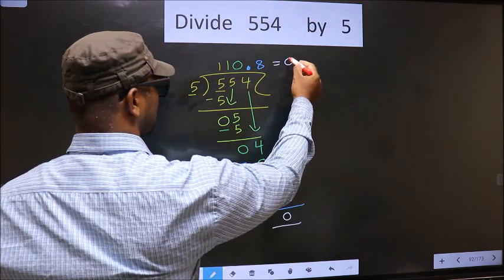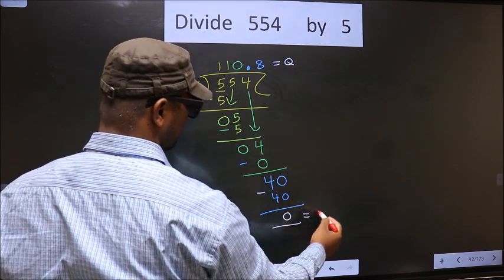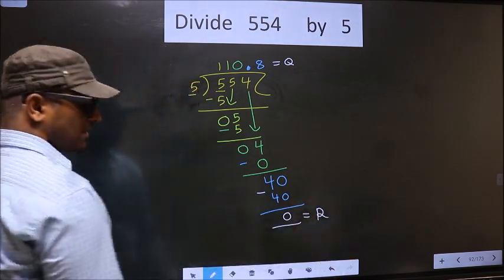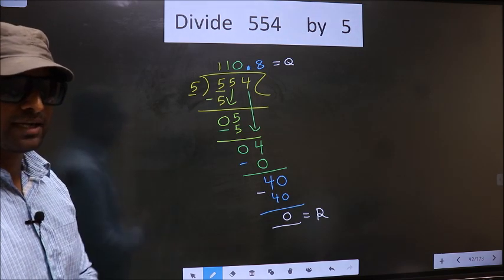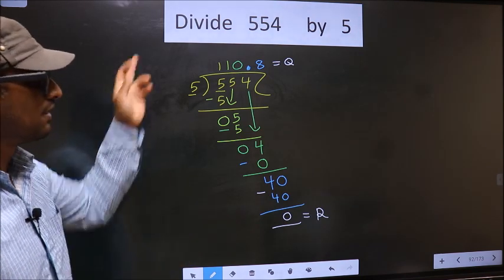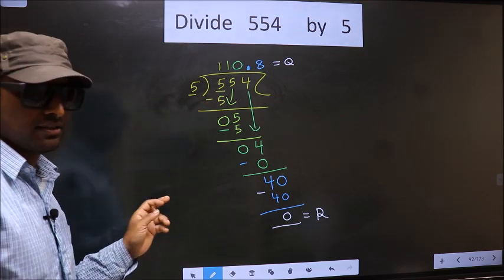So this is our quotient and this is our remainder. Did you understand where the mistake happens? You should not make that mistake. Am I clear?